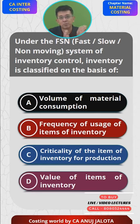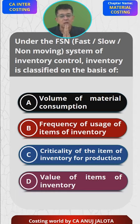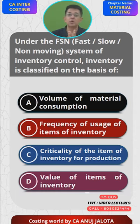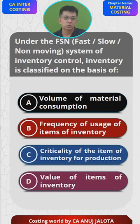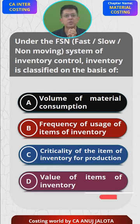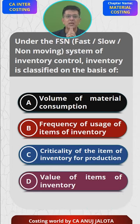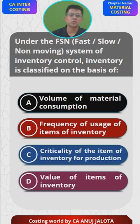Whichever units I consume faster, I would like to order them more in bulk or at faster intervals. For that, we find out something called raw material turnover ratios. Higher the ratio, that means the raw material is getting consumed faster.